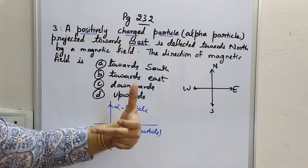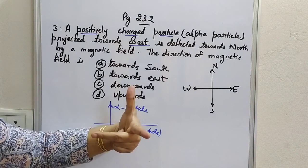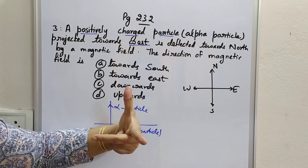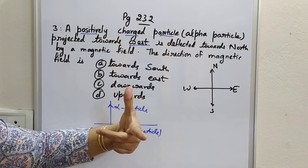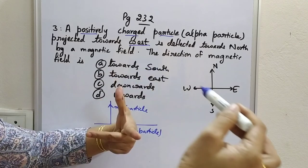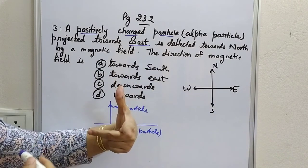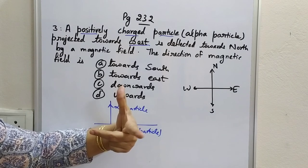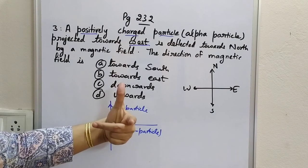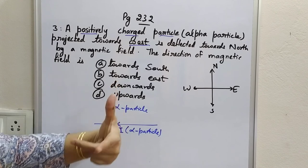My forefinger is outward to the plane of the board — if the forefinger is seen in the camera. Force, field, current. The direction of displacement — force — is bottom to top. The direction of current is from my right hand to left hand. So the middle finger gives the direction of the magnetic field, which is outward.